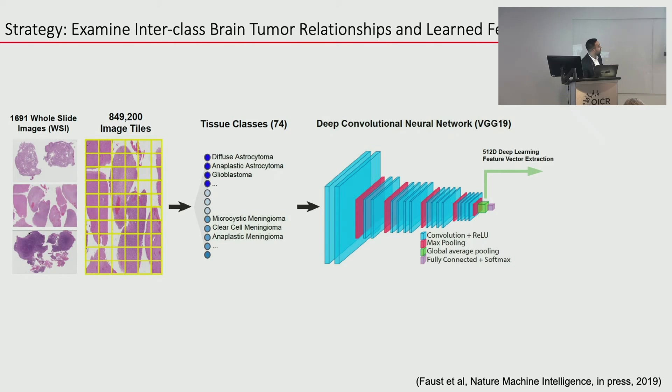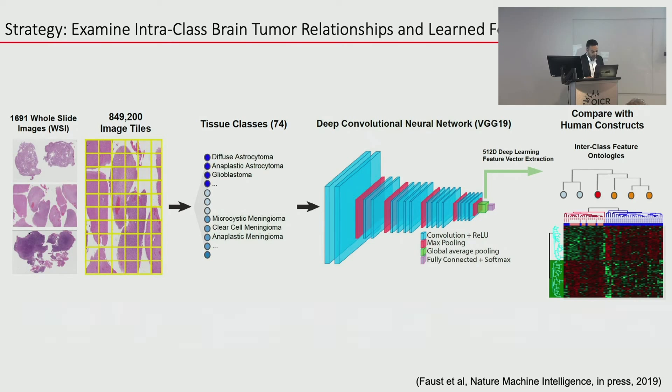We tried to see how a computer would organize a large number of tumor types. We took 1,691 whole slide images, about 850,000 image tiles, spanning 74 different classes, ran them through the network, and just before the classification step, extracted the feature vectors passing through the layers — using those like gene expression values to cluster different classes.